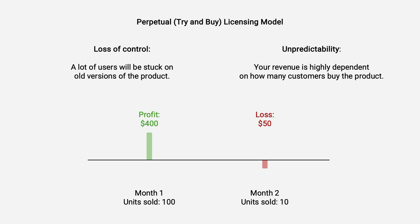But there are some problems with the perpetual model. The model means that you give up a lot of control of your software, and a lot of customers will be stuck on an old version. From a business perspective, selling a product at a one-time price gives you a lot of unpredictability. One month your revenue might be high because you get a lot of customers, while the next month your revenue might not be able to cover your expenses. These points make the perpetual license model inappropriate for more advanced software products, especially if you are selling B2B.